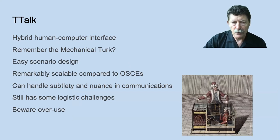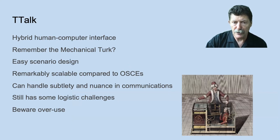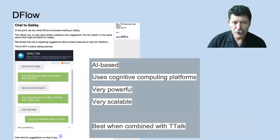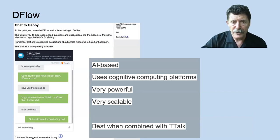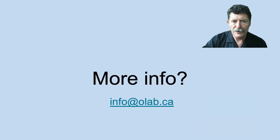So we've used two ways to tackle this problem. The first, developed a few years ago, was TurkTalk — basically a mechanical Turk — where a human is pretending to be a computer and using human facilities to interpret the responses in a live scenario. That is scalable to some extent, but it can have logistical challenges. Our most recent effort, called D-Flow, combines TurkTalk with algorithms from a cognitive computing platform, allowing us to handle these responses much more efficiently. If you're interested in hearing more, please contact us at the email address below.